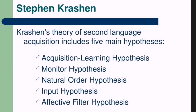This is the second part of Krashen's Theory of Second Language Acquisition. Here I am going to explain the 5 Hypotheses in connection with Second Language Learning. The first one is the Acquisition-Learning Hypothesis, which I have already explained in the first video. The second one is the Monitor Hypothesis, third is the Natural Order Hypothesis, fourth is the Input Hypothesis, and fifth is the Affective Filter Hypothesis.